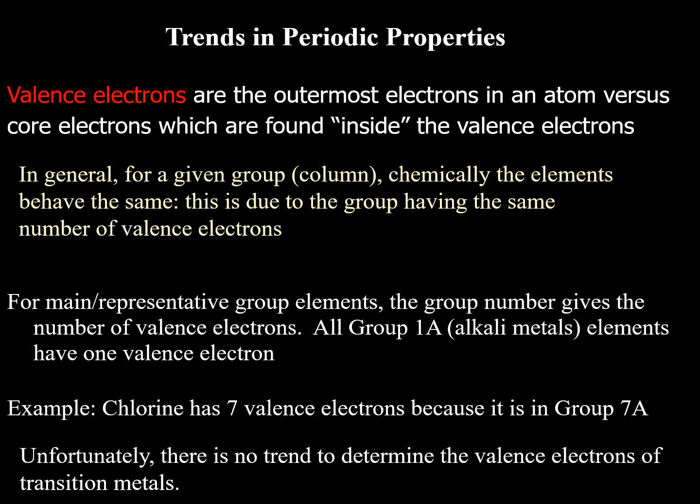Valence electrons are those found on the outermost shell — those are the ones located on the outside, the opposite of inner electrons. It's important to know the number of electrons on the outside because those are the ones responsible for chemical reactions and giving each element its properties. For example, group one alkali metals like sodium and lithium have one valence electron.